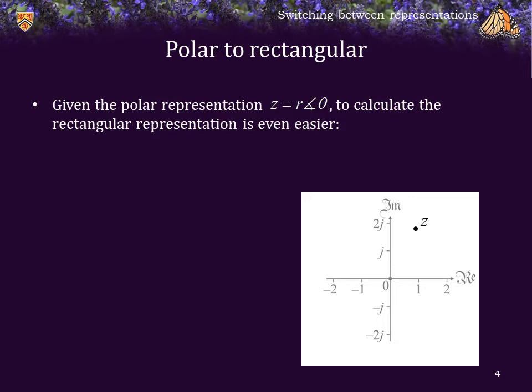Now, given the polar representation, so if I give you both r and theta, so that z equals r phase theta, of, say, 3 phase 45 degrees, or 3 phase 190 degrees, to calculate the rectangular representation is even easier. If z equals r phase theta, where r is the absolute value of z, and theta is the angle between the line connecting z and the origin, and the positive real axis.